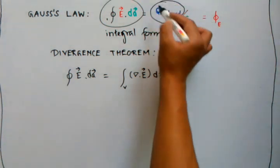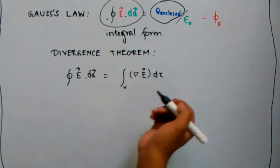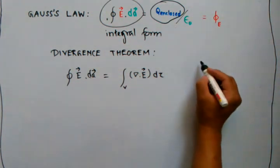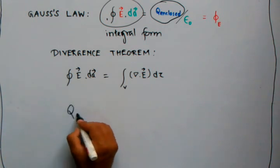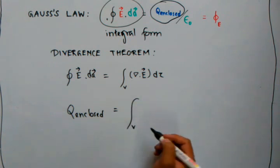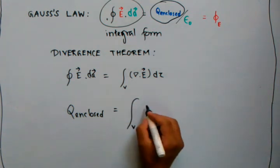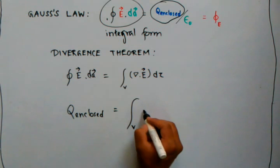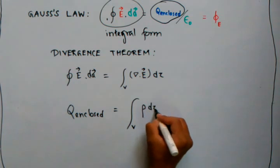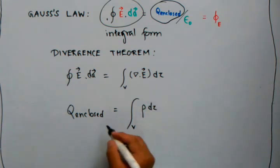If we write Q_enclosed in the integral form, we have to integrate it over all space. Suppose rho is the volume charge density and this is the volume element, then this becomes the integral of rho dV.